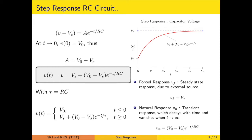Note that V₀ is the initial voltage on the capacitor, while Vs is the external source voltage that remains in the circuit for a long time. Substituting the constant A gives the complete voltage expression: V(t) = Vs + (V₀ − Vs)·e^(−t/τ), where the time constant τ = RC. This equation describes the complete response both before and after the switching operation.